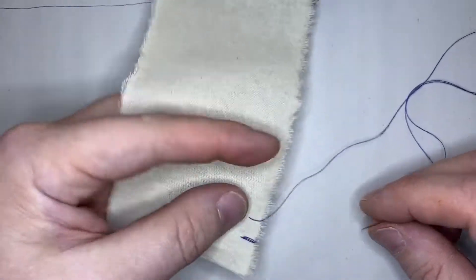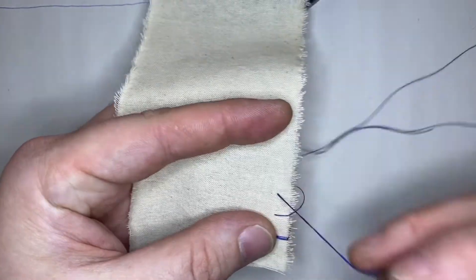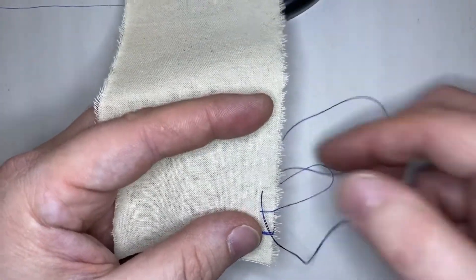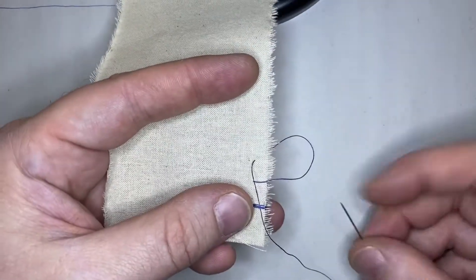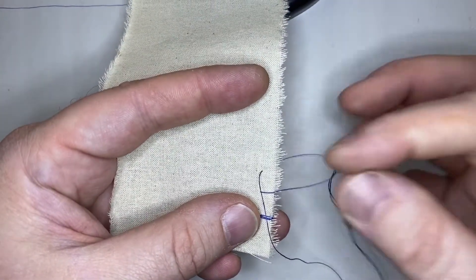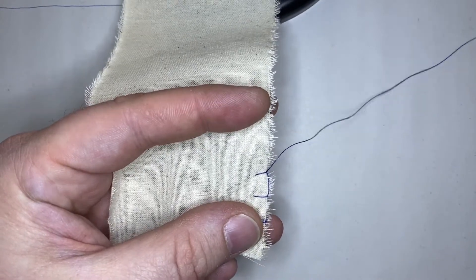Do the same thing again. Stitch from the back side, and as your thread loop gets smaller and smaller, come through the back side of the loop as well. Pull like that, and it locks down on the edge.